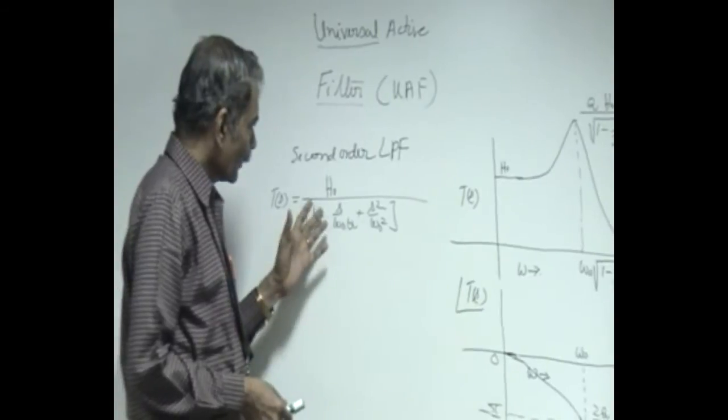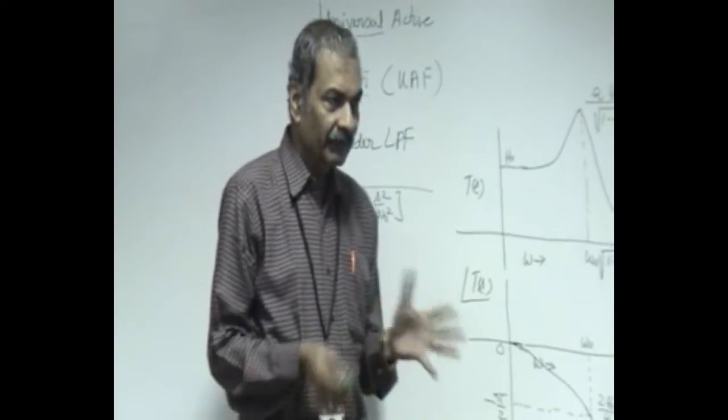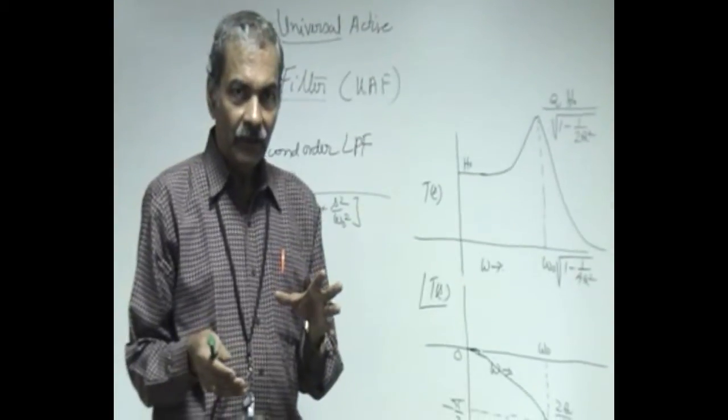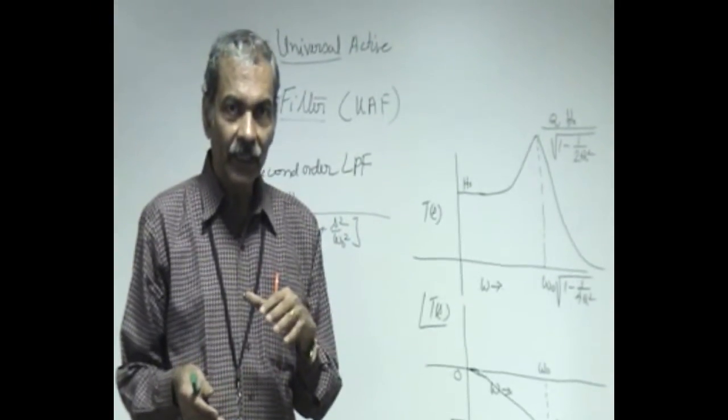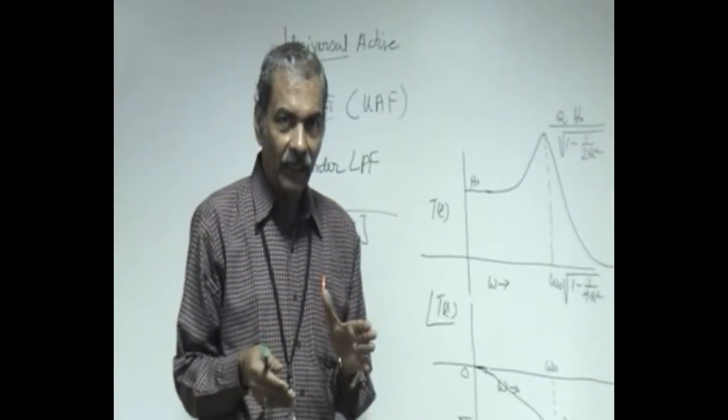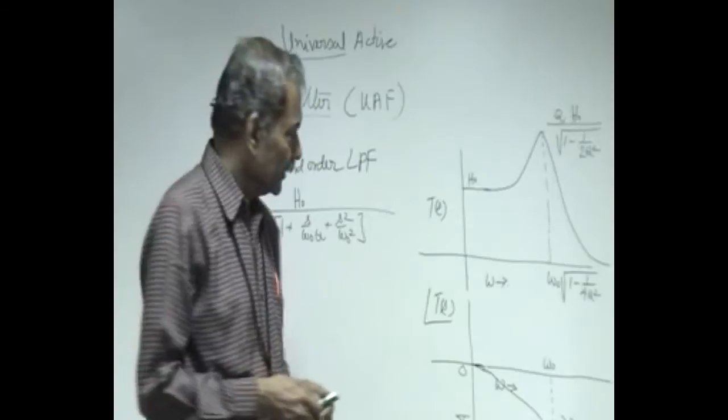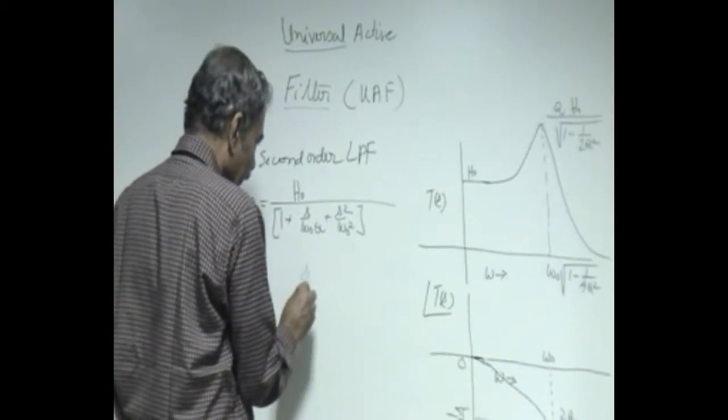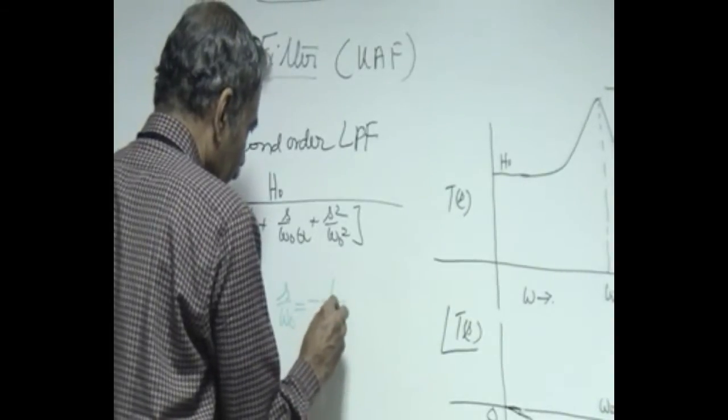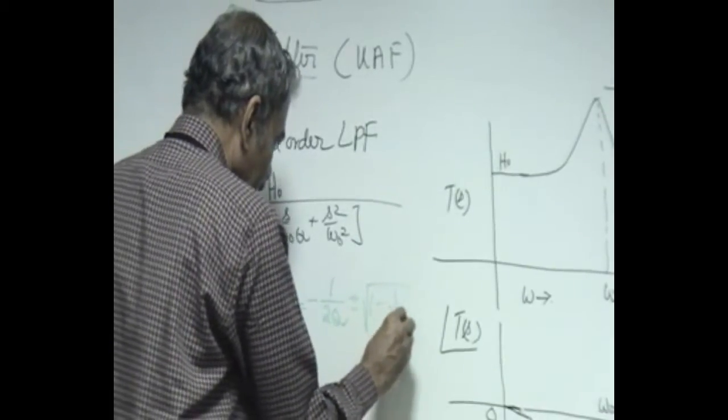It has only two poles at a point on the left half plane. If it is on the real axis negative real axis the Q is less than or equal to half. If the Q is greater than half the poles split into a complex conjugate pairs. You can see that the solution of this is S by omega naught equal to minus 1 over 2Q plus or minus root of minus root of 1 minus 1 by 4Q square.